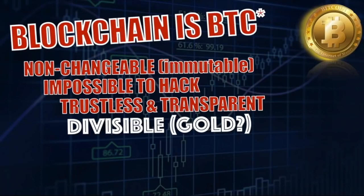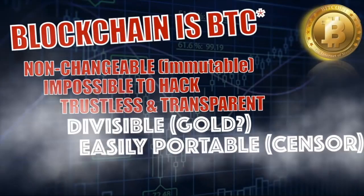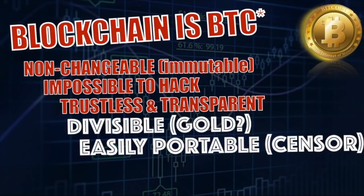Bitcoin is also easily portable — you can move it across the world in a couple of minutes, very cheaply, whereas moving gold is going to cost a lot of money and it's very heavy. It is also censorship resistant. If you were in some type of country where they go to seize all your assets, if you have gold they're probably going to take it. But with Bitcoin, they can't — it lives in all those nodes and computers distributed across the ledger.